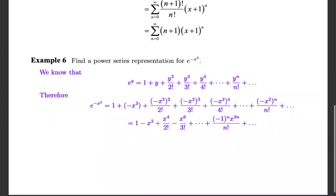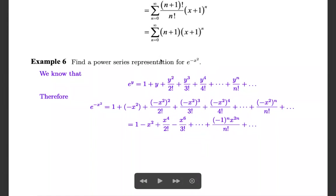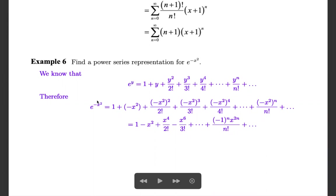Next, find the power series representation for e raised to minus x squared. We know the expansion of e^y is 1 plus y plus y²/2! plus y³/3! plus y^4/4! and so on, up to y^n/n!. We simply replace y with minus x² to get the expansion for e^(minus x²): 1 plus (minus x²) plus (minus x²)²/2! plus (minus x²)³/3! plus (minus x²)^4/4!, which gives 1 minus x² plus x^4/2! minus x^6/3! plus x^8/4!.